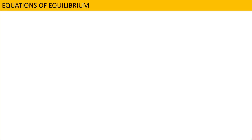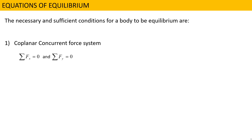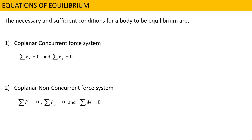Regarding equations of equilibrium — the necessary and sufficient conditions for a body to be in equilibrium: for a coplanar concurrent force system (all forces acting at a single point), the conditions are ΣFx = 0 and ΣFy = 0. For a coplanar non-concurrent force system, the conditions are ΣFx = 0, ΣFy = 0, and ΣM = 0 — meaning horizontal, vertical, and moment must all be zero. Thank you, that's all for this video.